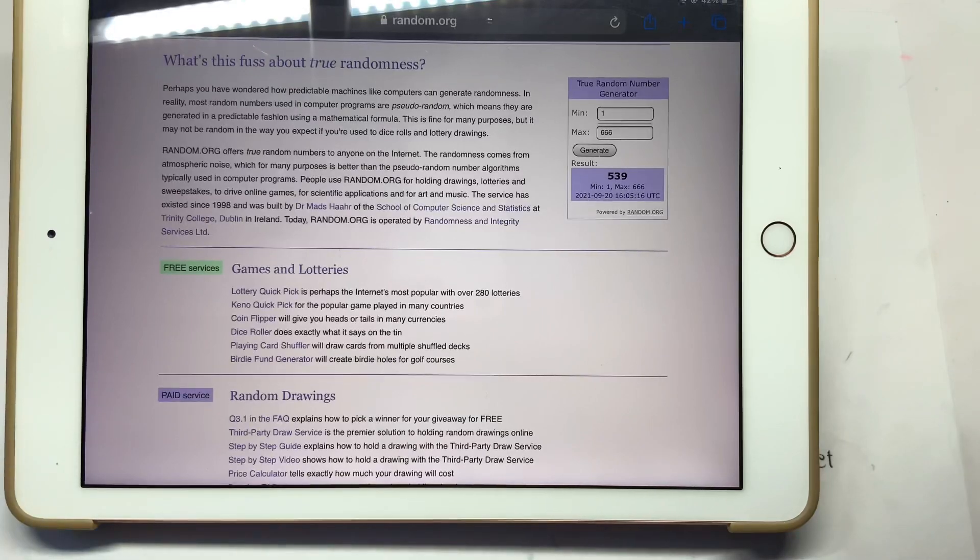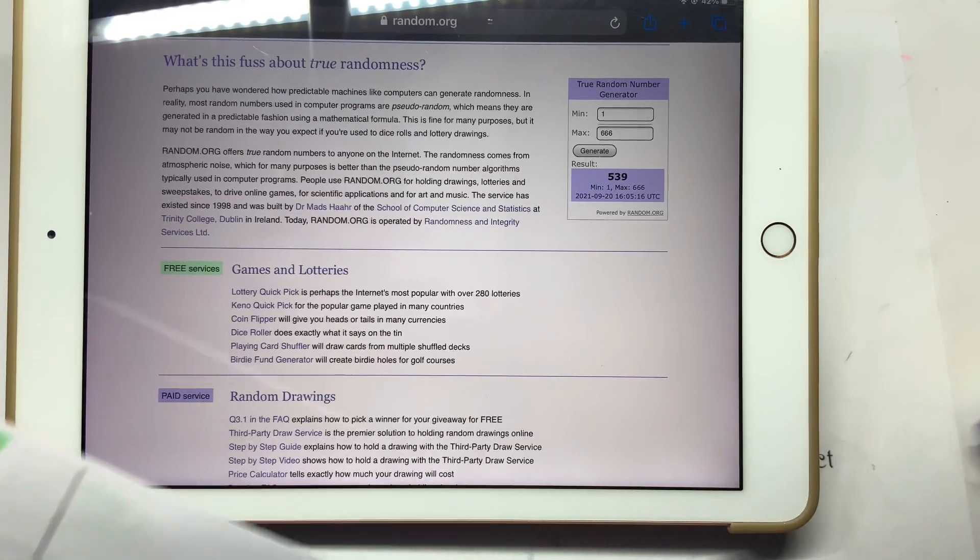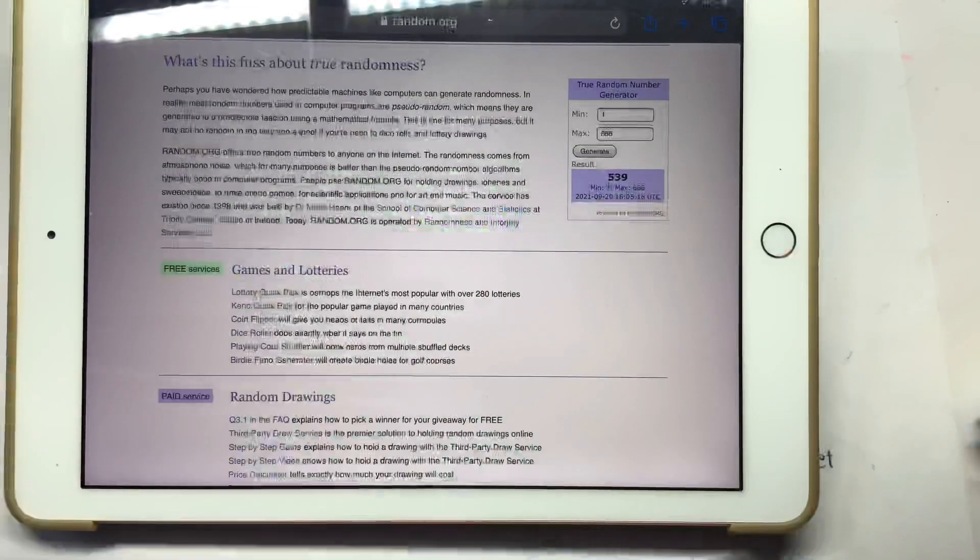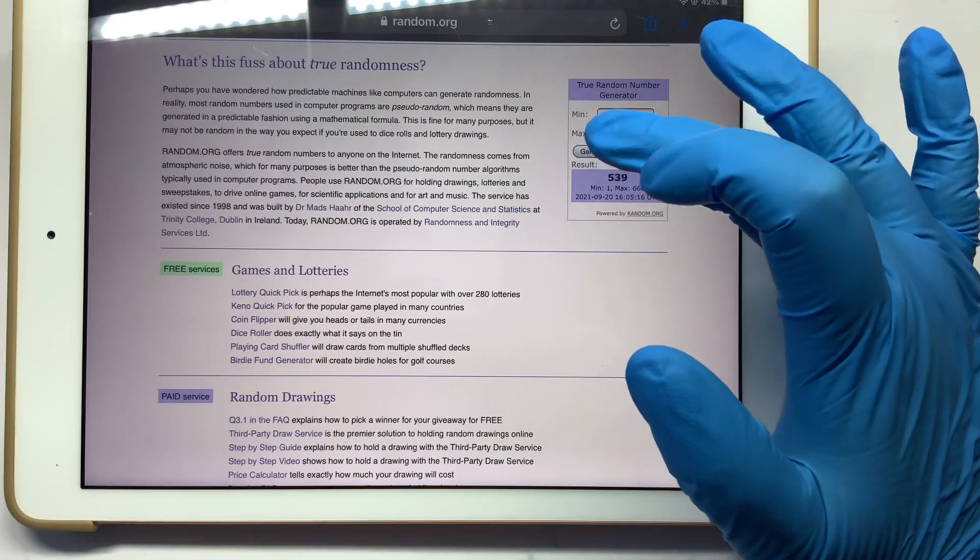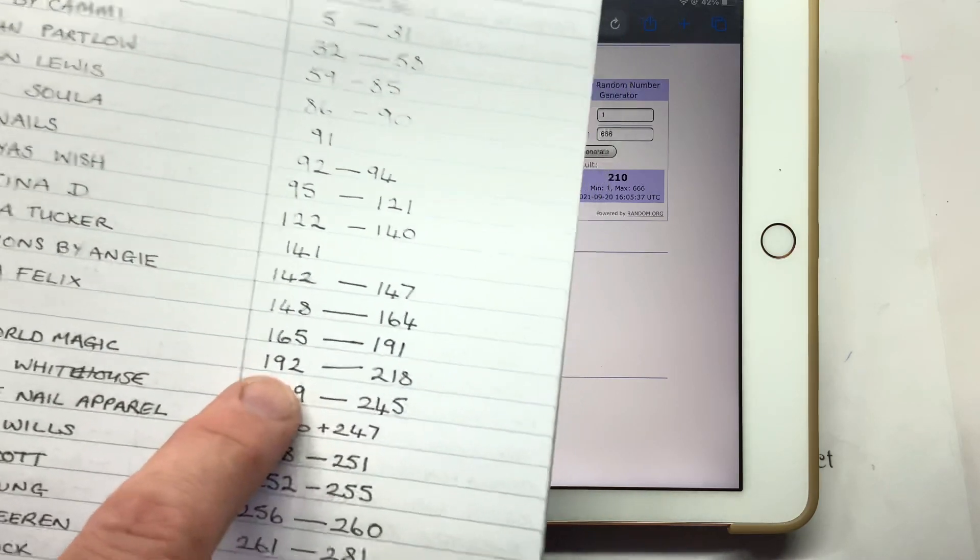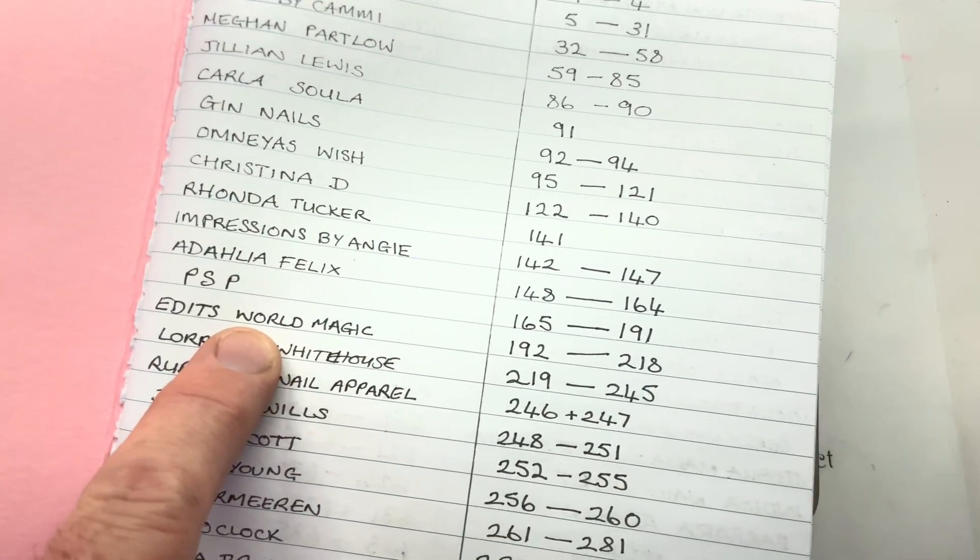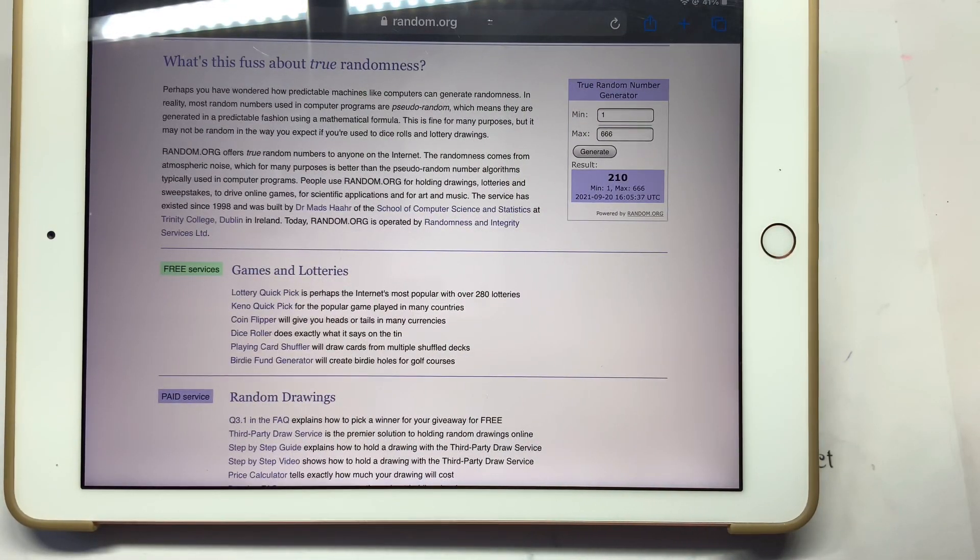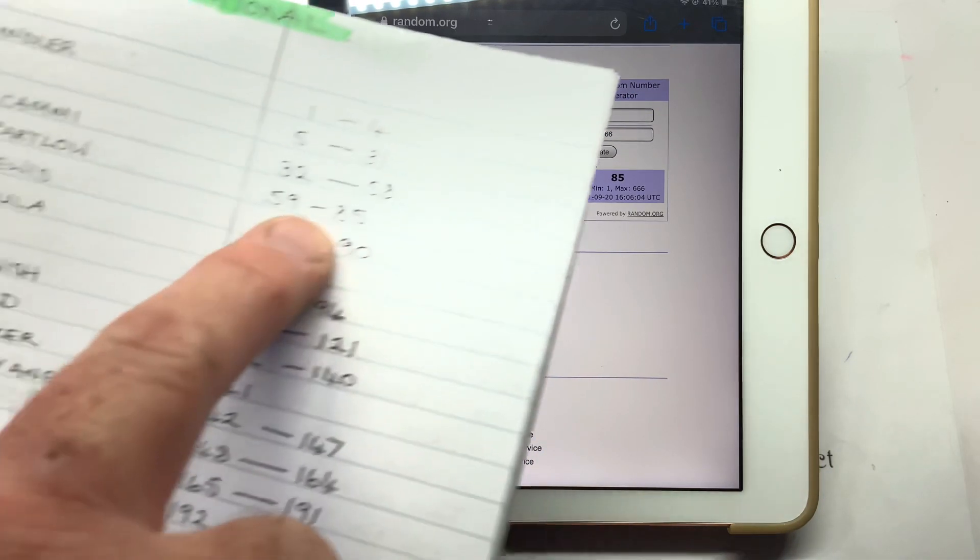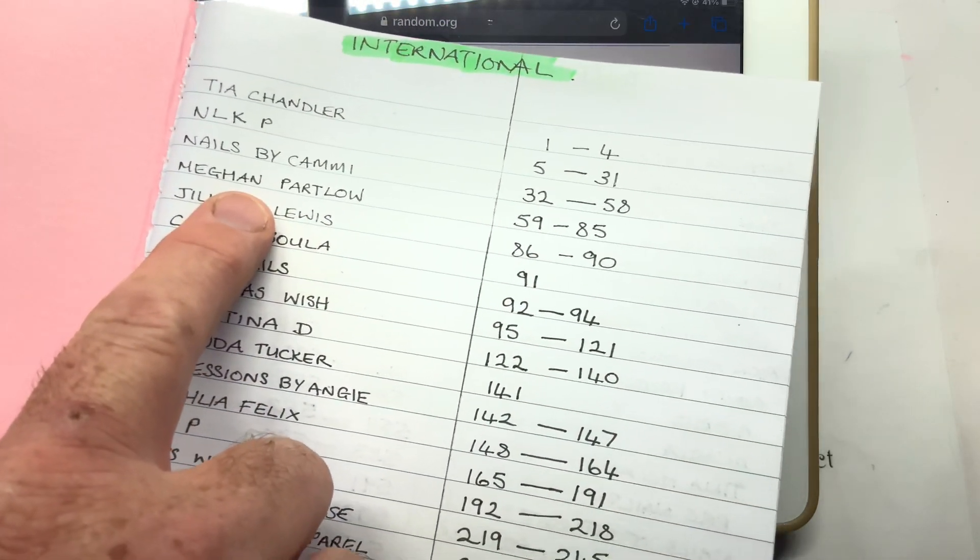539 is your first one, this is for ten pounds. That's Anaria. Next one is for fifteen pounds, 210. Edits World Magic. I am writing these down at the same time if you're wondering why there's a gap. And this is for twenty pounds, number 85. Megan Partlow.